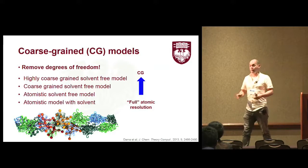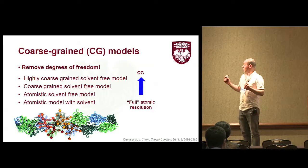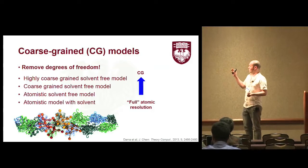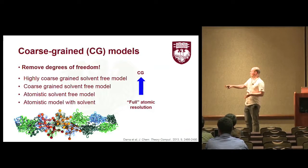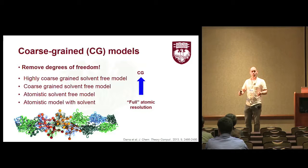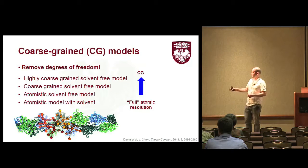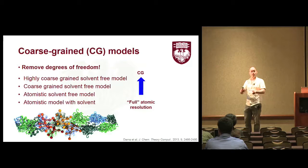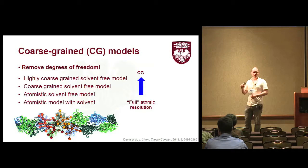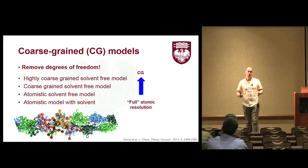I'm going to be talking about coarse-grain models, so it's a good idea to first figure out what a coarse-grain model is. Simply, we remove degrees of freedom from a detailed model. If you think about a continuum of models: at the low level, we have atomistic models with solvents — purely classical mechanics here. We can remove the solvents and still have an atomic representation of the molecules. We can have a coarse-grain solvent-free model where we reduce the number of atoms we're simulating by condensing multiple atoms into single pseudo-particles, while still trying to capture the same physics. The sorts of things we're trying to do are these very aggressively coarse-grained models, because they'll really allow us to push computer simulation to cell-scale processes.